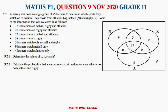For Question 9.2, there is a Venn diagram. A survey was done among a group of 75 learners to determine which sports they watch on TV, choosing from athletics, netball, and rugby. The information collected shows: 12 watch both netball and rugby, 25 watch rugby and athletics, 22 watch netball and athletics, 38 watch rugby, 5 watch netball and rugby only, 9 watch netball only, and 4 watch athletics only.